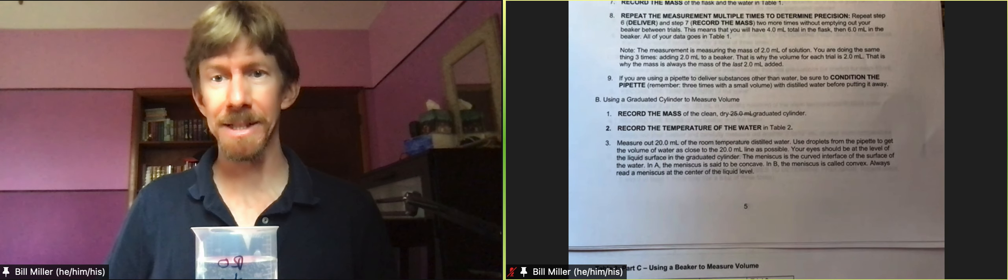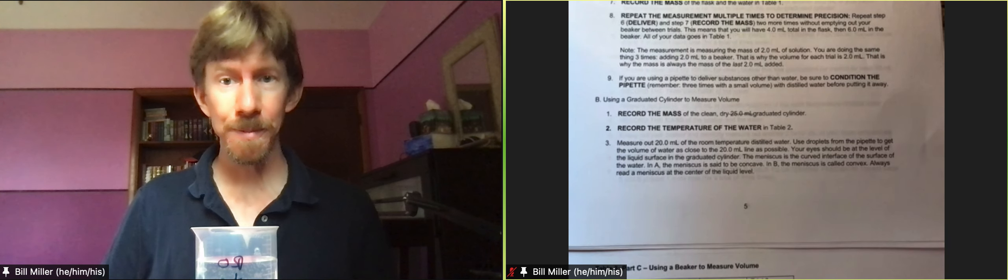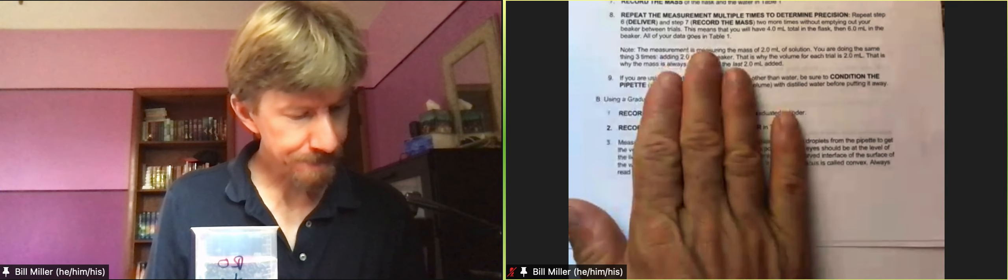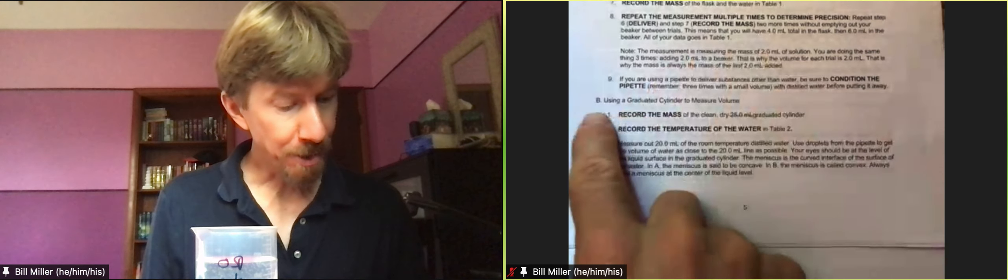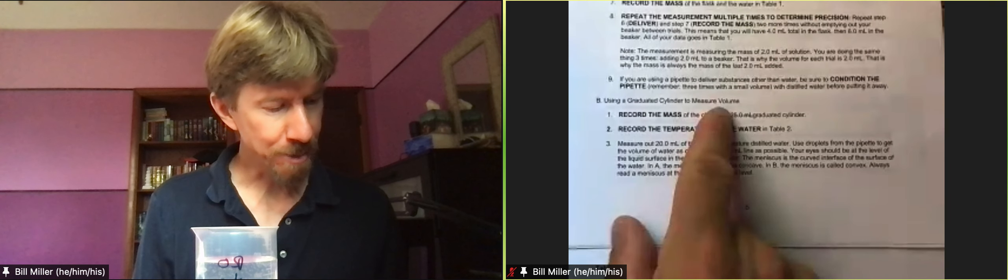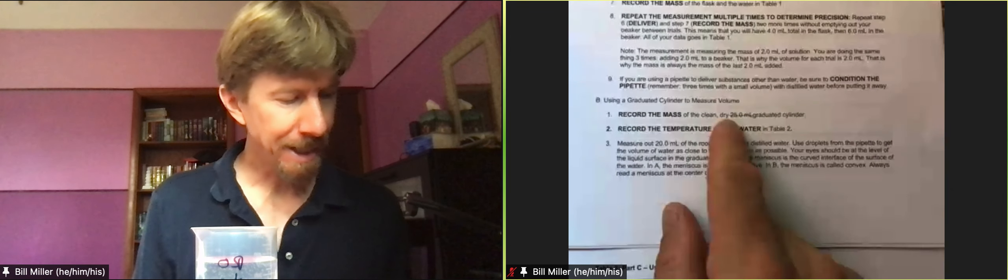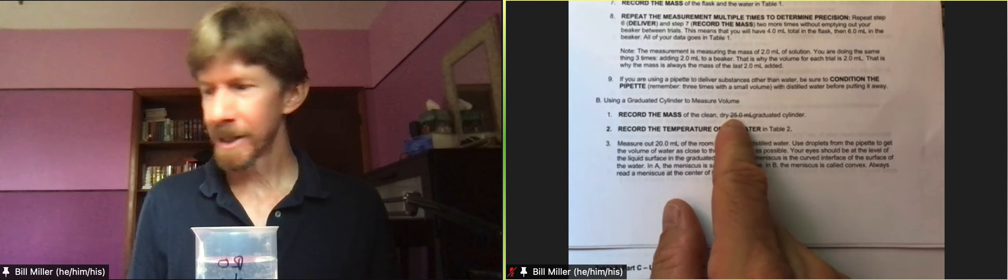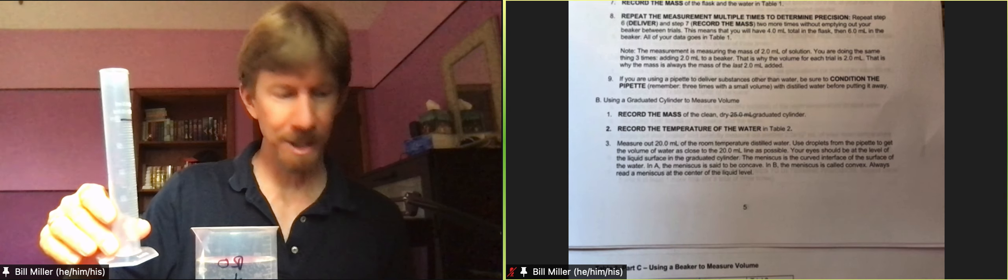This is experiment one basic techniques, table two. I've got my procedure here for Part B: using a graduated cylinder to measure volume. It says record the mass of the clean dry graduated cylinder. I think I have the edited version that I accidentally printed out. Previously we said it could be a 25 or a 50 milliliter graduated cylinder.